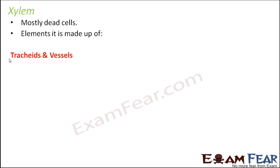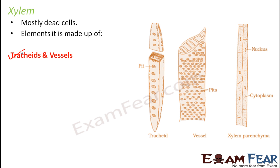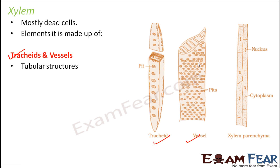Tracheids and vessels are the real conducting vessels of xylem. Vessels are slightly wider tubes, whereas tracheids are comparatively slender tubes with tapered ends. They differ structurally and functionally, though at this level you do not need to know all the details. These are the most important elements because they help in the actual process of transport — they are tubular structures that conduct water and minerals vertically, helping in the upward movement of water and minerals.